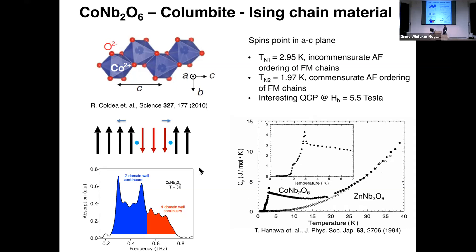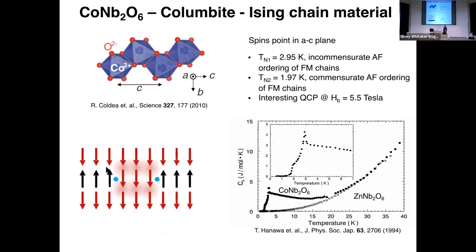The real material, cobalt niobate, has 1D chains, but at lowest temperature it undergoes two different phase transitions, eventually into a commensurate antiferromagnetic state — ferromagnetic chains antiferromagnetically correlated to neighbors. If you flip a spin, you get domain walls that go off into space, but the separation of these domain walls makes the intermediate spins unhappy, leading to a linearly confining interaction between them — much like color confinement in QCD, where the quarks and their bound state form a meson.